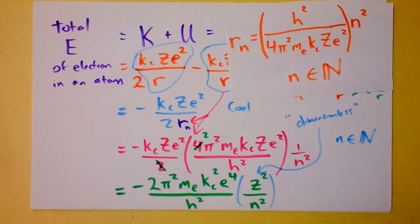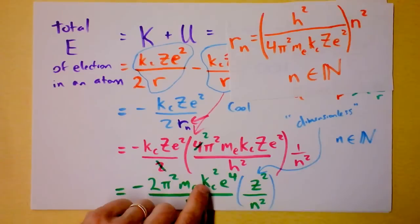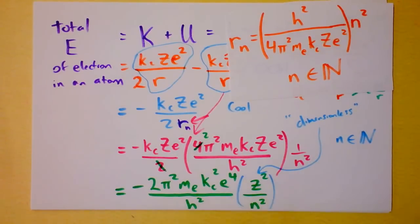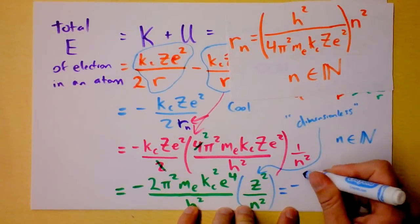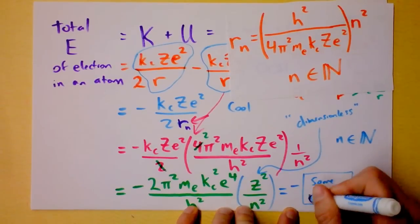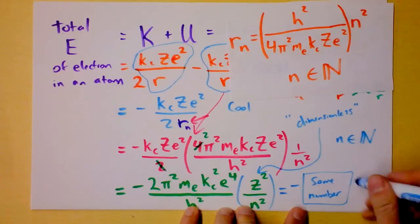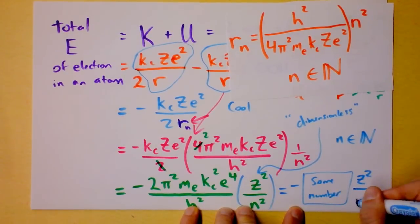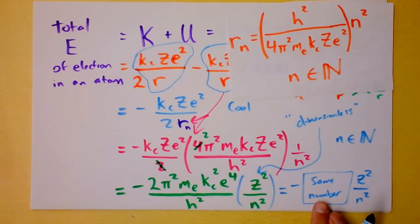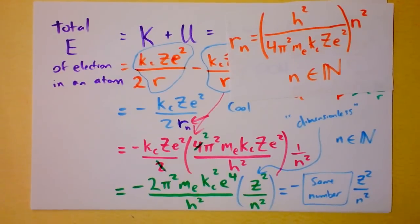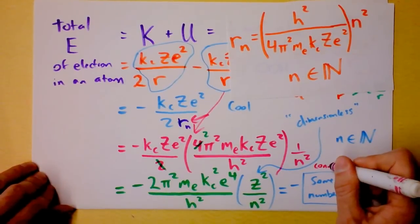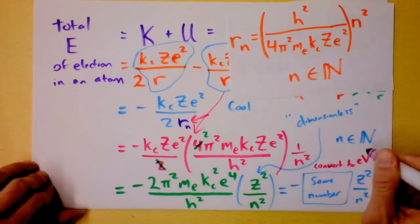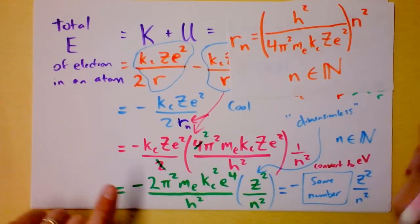I would like you to look up each of these numbers. Look up pi. Look up the mass of the electron. Look up Coulomb's constant. Look up the fundamental charge. Look up h. And multiply them in that way. And find out it's just going to be, this is going to be negative some stupid number. And then it's going to be multiplied by z-square over n-square. What kind of units do you expect this number to have? If this is dimensionless, what units should that stupid number have right there? I want you to figure that out. I also want you to find that number. And then I want you to convert it to electron volts. Convert to electron volts.